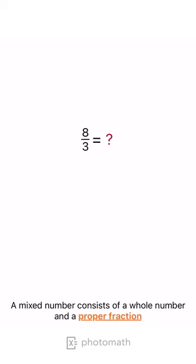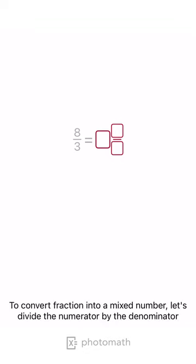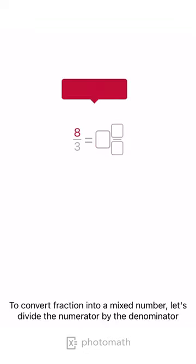A mixed number consists of a whole number and a proper fraction. To convert a fraction into a mixed number, divide the numerator by the denominator.